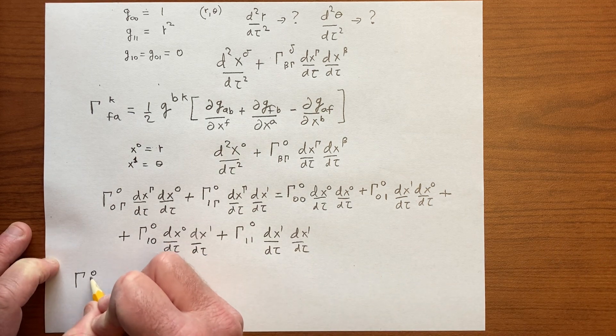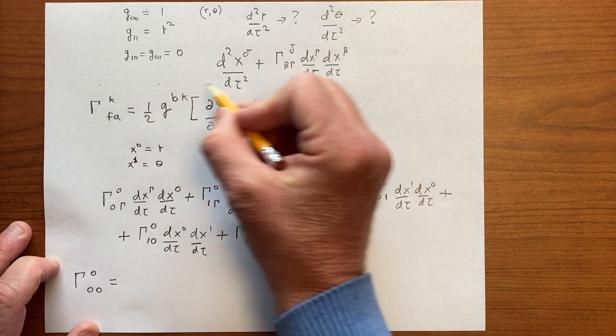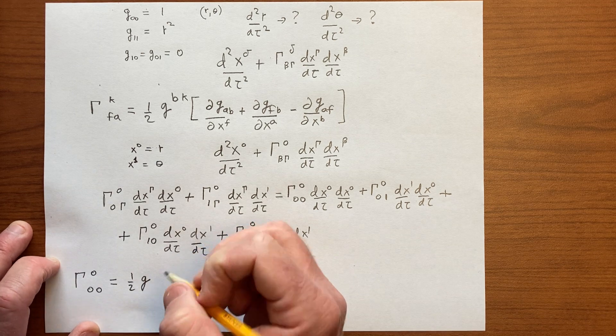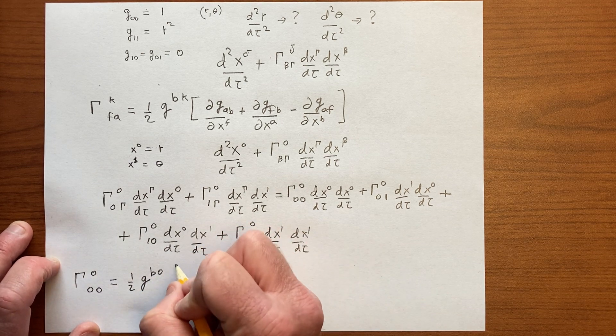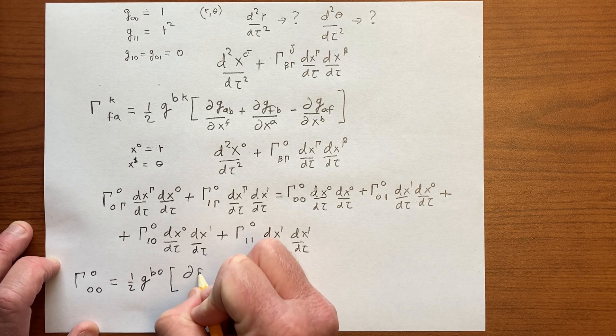So Γ^0_00. All right, we're using this. That looks like ½g^b0 ∂g_0b/∂r or ∂x^0.